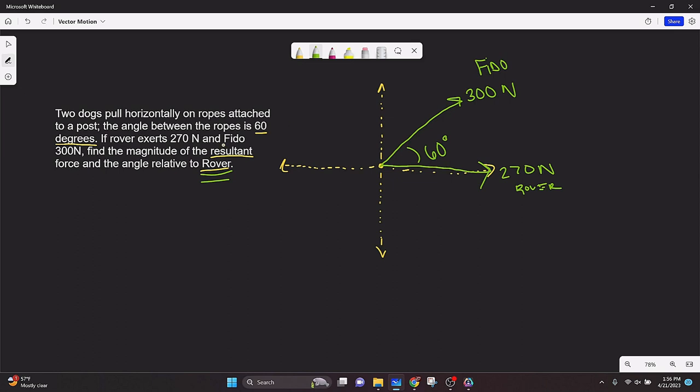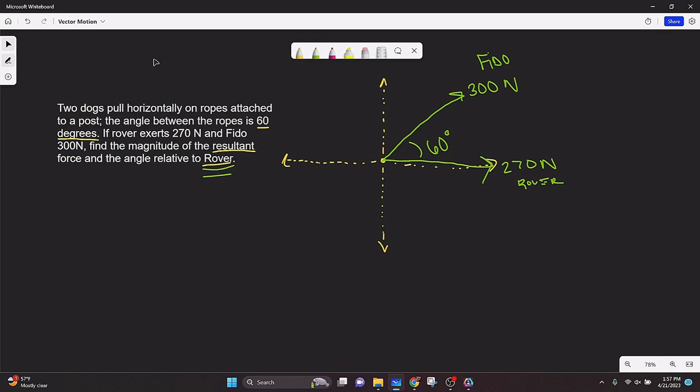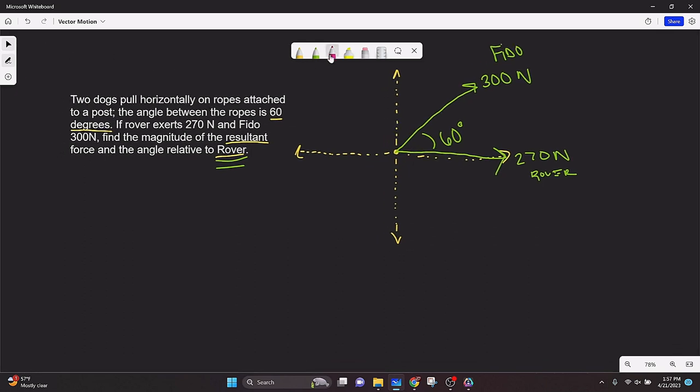Now we want to find the magnitude of the resultant force between these two forces. Now initially, you might think, well, let's just add 300 plus 270. Well, that's not going to give the correct answer. We need to actually break this into components. So it's more involved than you might anticipate. So what are the x and y components of each of these? Because if we're adding vectors, we can't just add their magnitudes. We have to add their component parts.